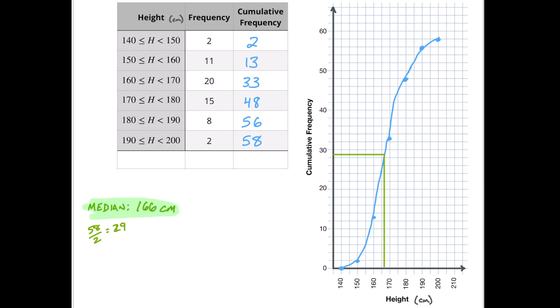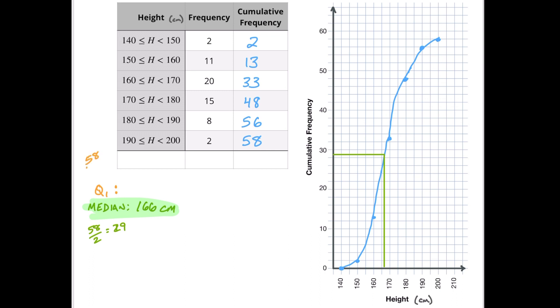Another value you might have to find is quartile one. Quartile one is just the first 25% of your data. So we're going to take 58 and divide it by four, which gives us 14.5. Plotting that on the graph, it looks like that's going to fall right at 160. So we'll call that 160 centimeters for quartile one.